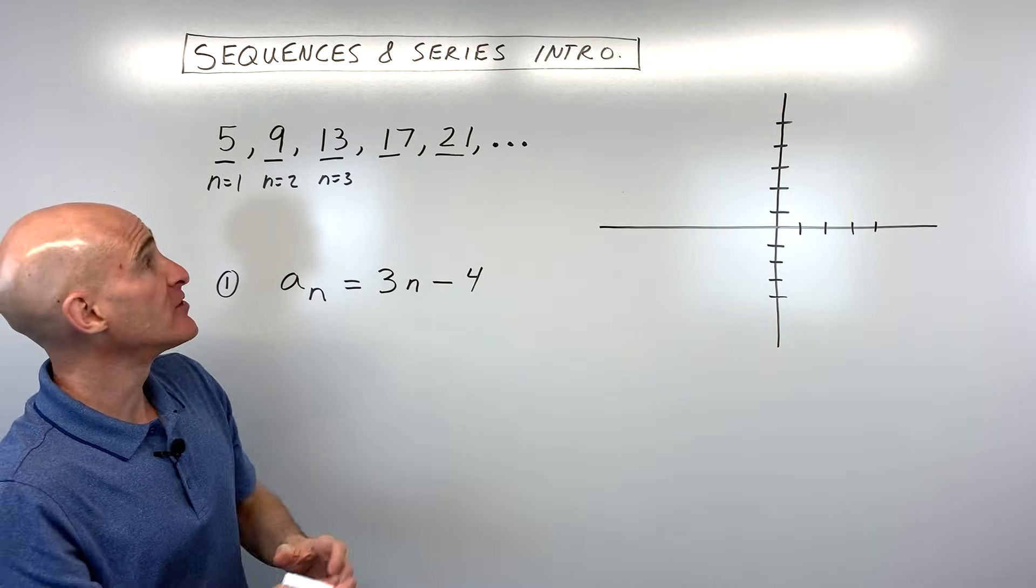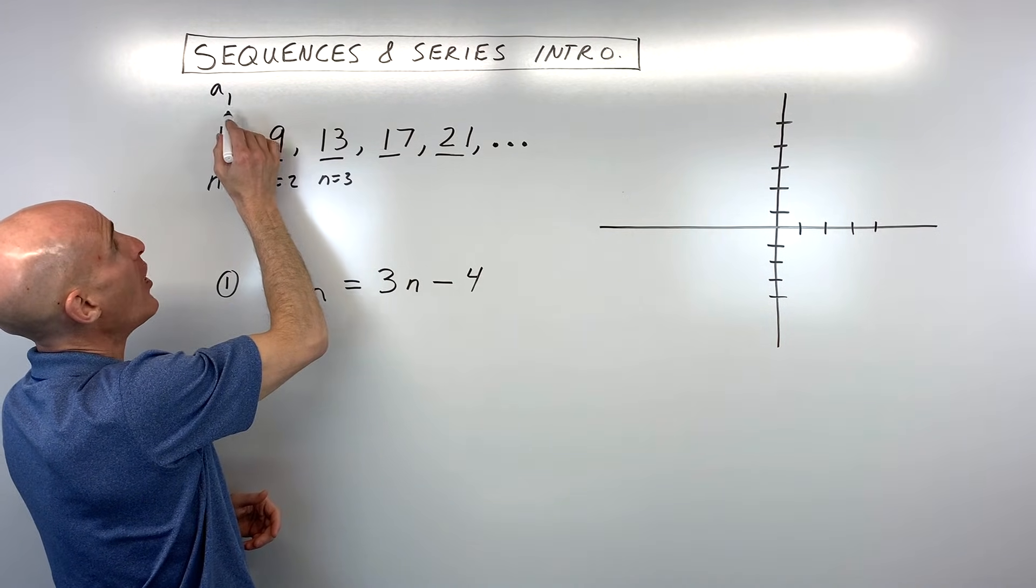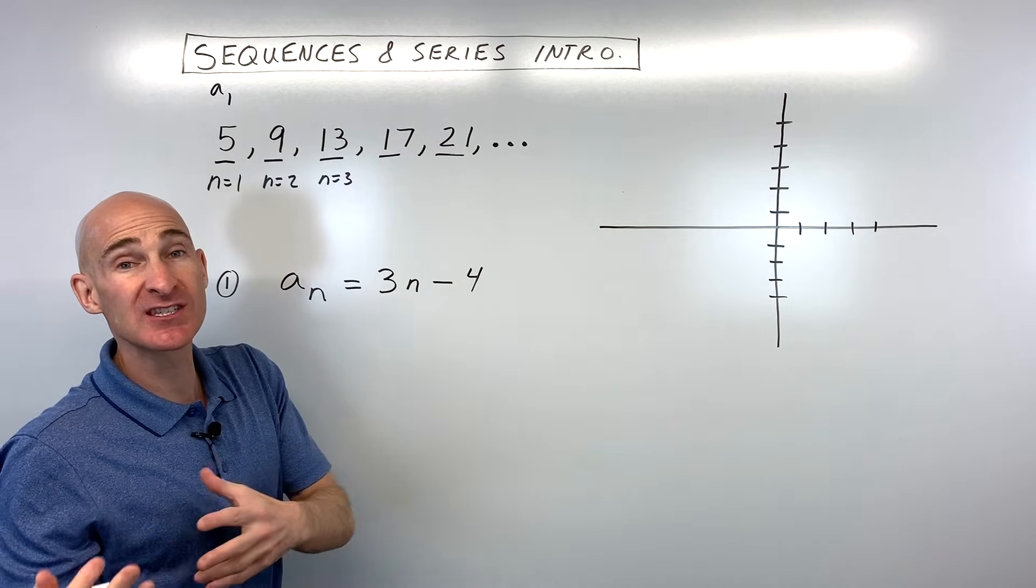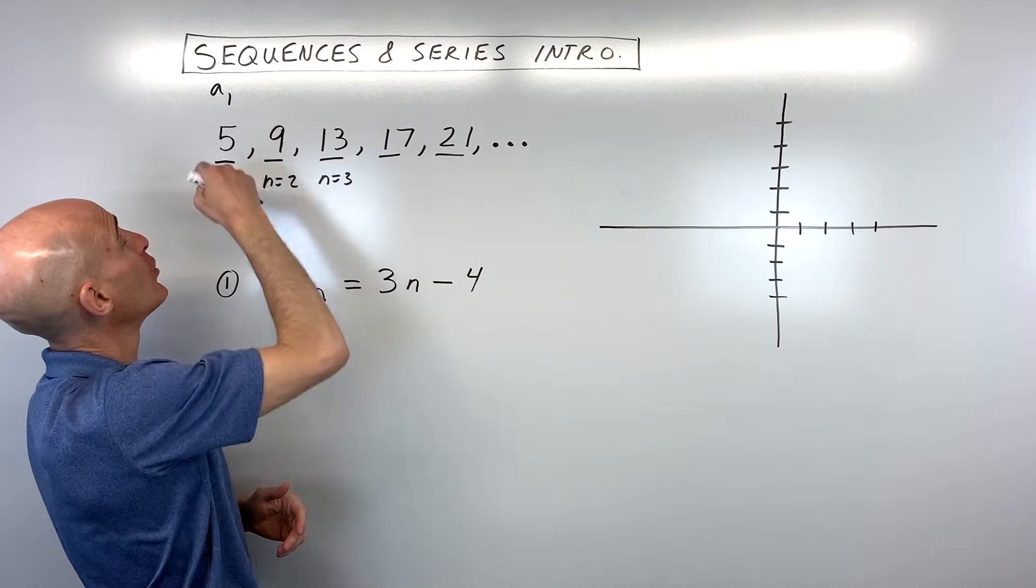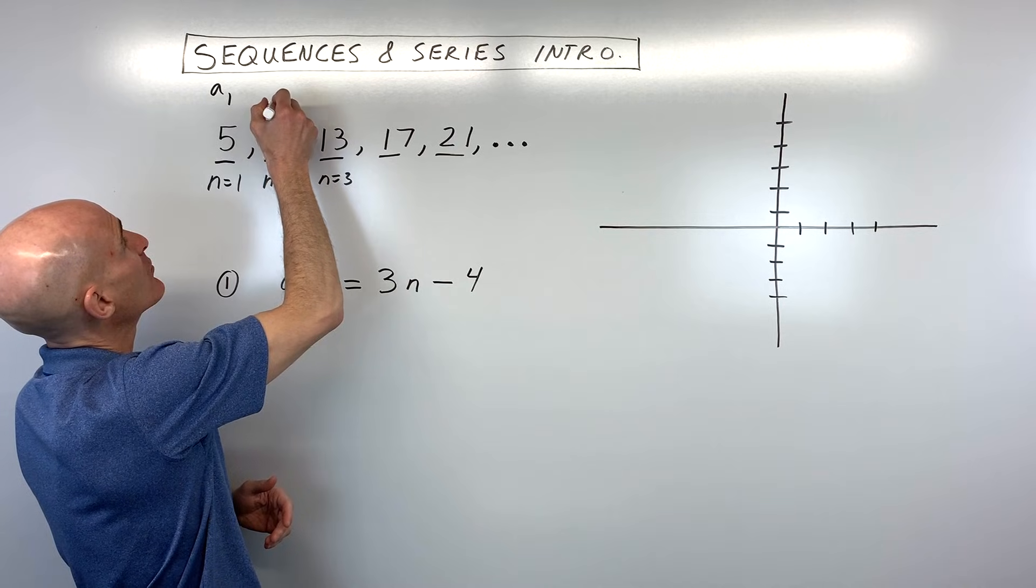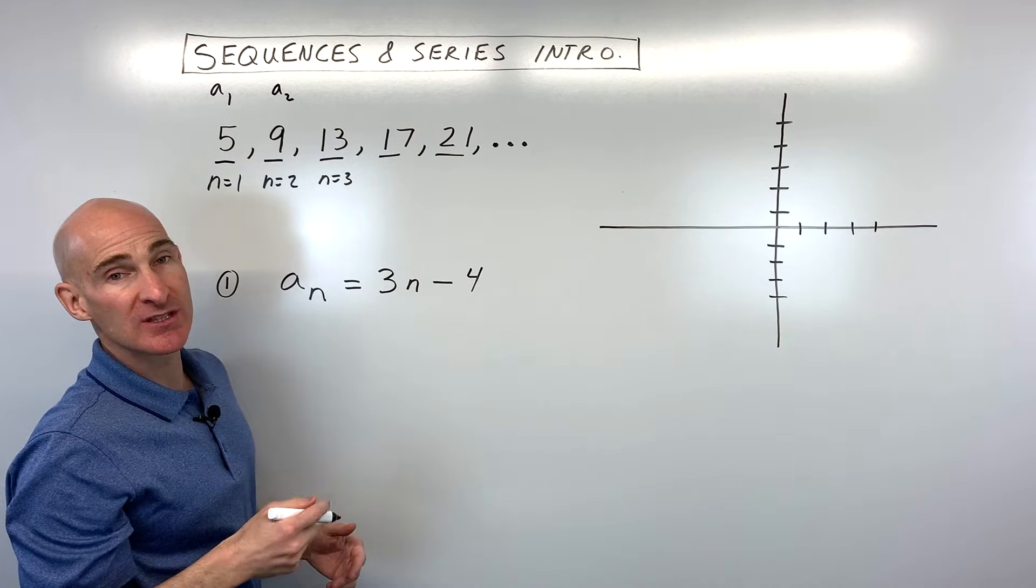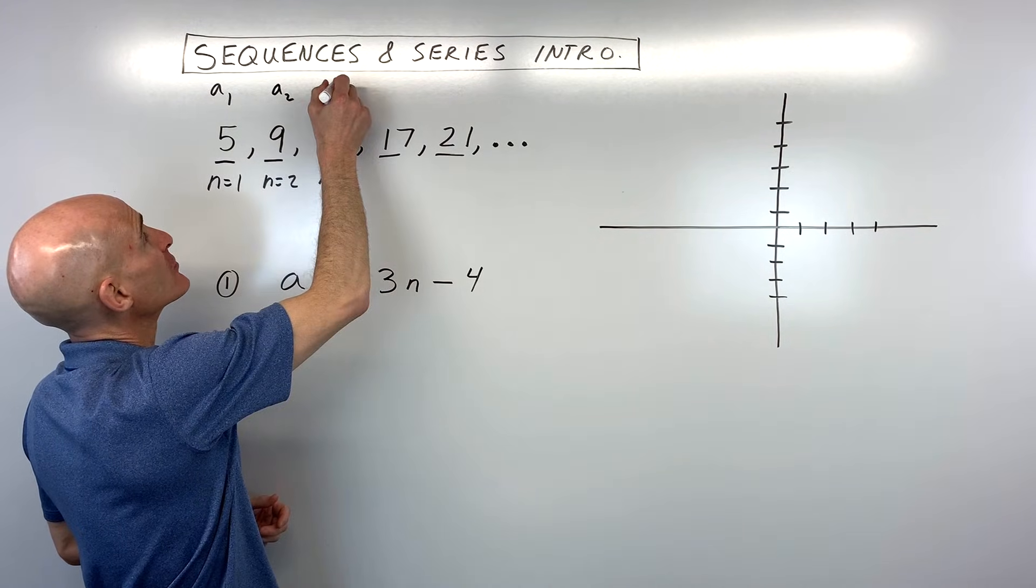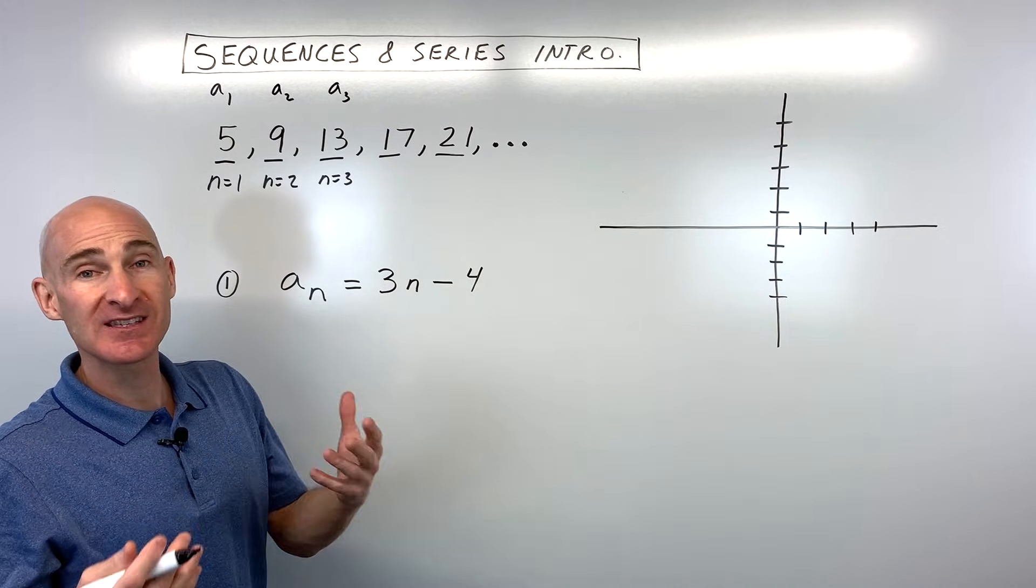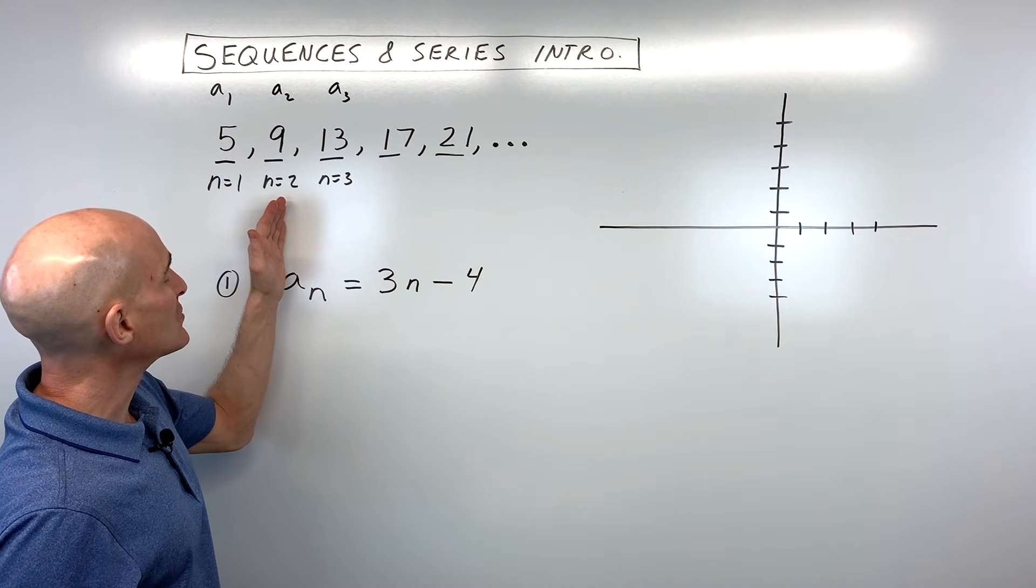But the value of the term, we refer to that as a sub 1. See how that's like a little bit lower? It's a subscript, like submarine, a little bit below the line. And then this here, 9 is a sub 2, it's the value of the second term. 13 is a sub 3, it's the value of the third term, etc. So that's a little bit about the notation.